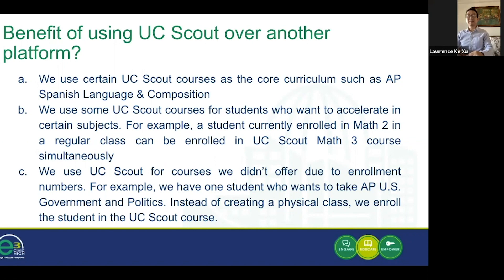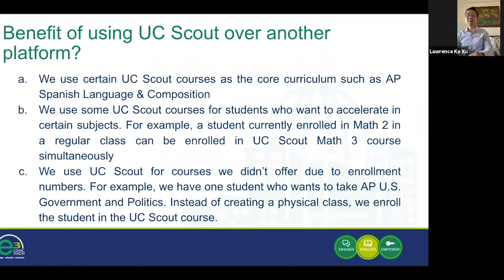Different online learning platforms provide different benefits. When using UC Scout, we notice the following. First, we can use certain UC Scout courses as the core curriculum, such as AP Spanish Language and Composition. We also use some UC Scout courses for students who want to accelerate in certain subjects — for example, a student currently enrolled in Math 2 in a regular class can be simultaneously enrolled in UC Scout Math 3. Also, we use UC Scout for courses we didn't offer due to enrollment numbers. For example, we had one student who wanted to take AP US Government and Politics, and instead of creating a physical class, we enrolled the student in the UC Scout course.